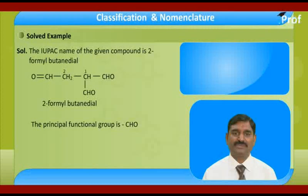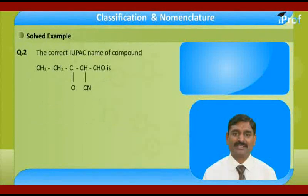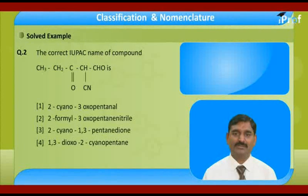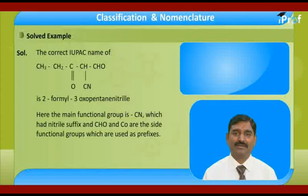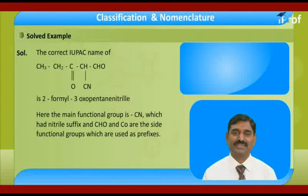The principal group is CHO. Second, find the correct IUPAC name of this compound. This compound has CHO, CO, and CN groups. The main functional group is aldehyde. The chain is 1-2-3-4-5, giving a 5-carbon chain. However, nitrile is the main functional group, so the suffix used is nitrile. CHO and CO are used as prefixes — the prefix of CHO is formyl and the prefix of CO is oxo.